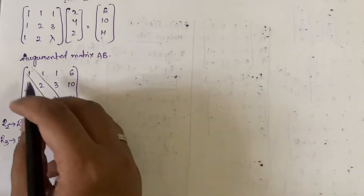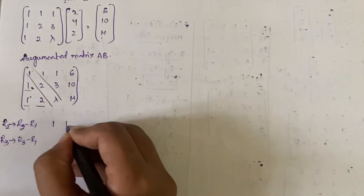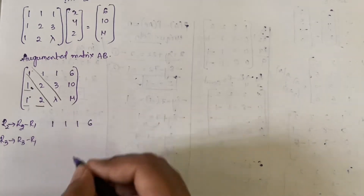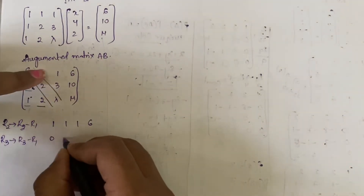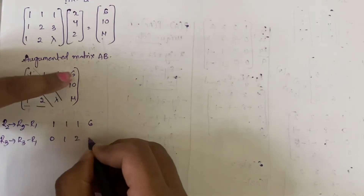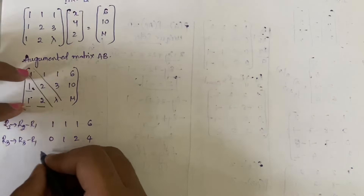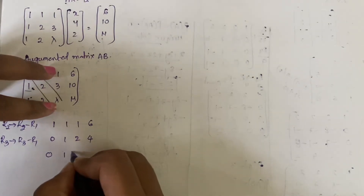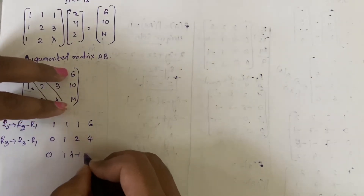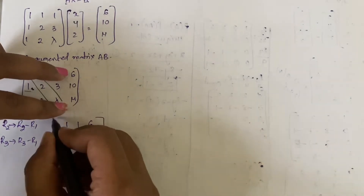After applying R2 → R2 − R1 and R3 → R3 − R1, the first row stays the same [1 1 1 | 6]. The second row becomes [0 1 2 | 4] and the third row becomes [0 1 λ−1 | μ−6].